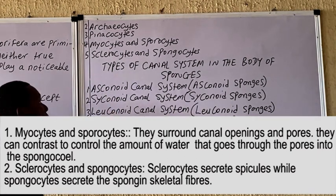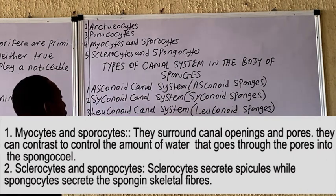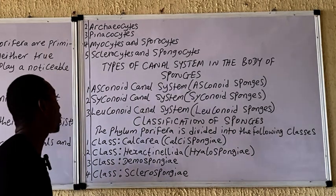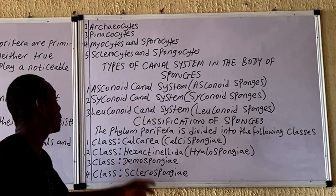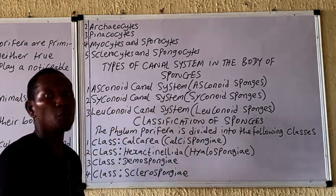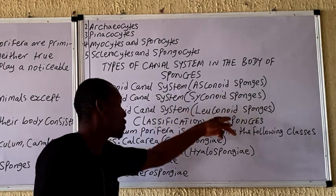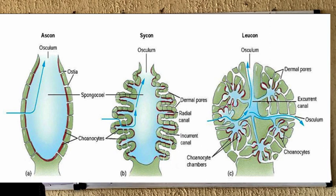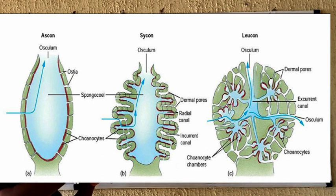We have various types of canal systems in the body of the sponges. There are about five canal systems, but the three common ones are the asconoid canal system, the syconoid canal system, and the leuconoid canal system. The asconoid sponges are tubular in shape and are the most primitive of these structures. Because of their nature, they are usually small in size.